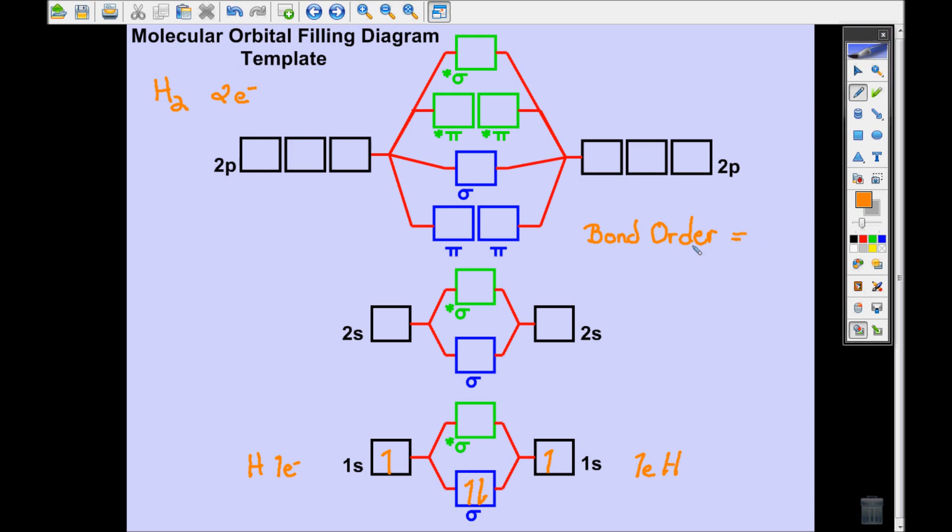There's something that chemists and physicists use that's called bond order. The bond order can tell you what kind of bond exists between those two atoms, and it is defined as the number of bonding electrons minus the number of antibonding electrons.